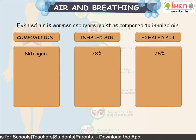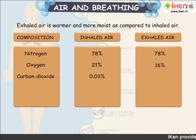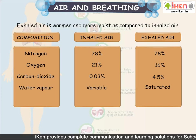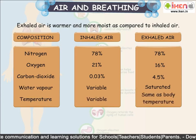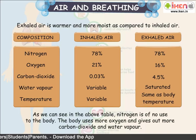Looking at the composition: nitrogen is 78% in both inhaled and exhaled air. Oxygen is 21% in inhaled air and 16% in exhaled air. Carbon dioxide is 0.03% in inhaled air and 4.5% in exhaled air. Water vapor is variable in inhaled air and saturated in exhaled air. Temperature is variable for inhaled air and equals body temperature for exhaled air. As we can see, nitrogen is of no use to the body; the body uses more oxygen and gives out more carbon dioxide and water vapor.